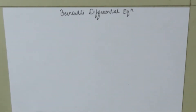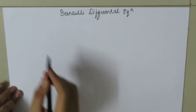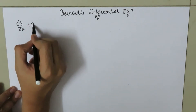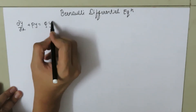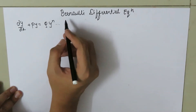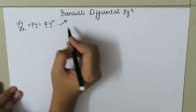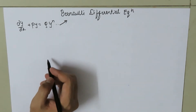Today we are going to study the concept of Bernoulli differential equation. If the differential equation is of the form dy/dx plus p times y equals q times y to the power n, then such a differential equation is called a Bernoulli differential equation.